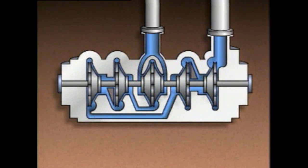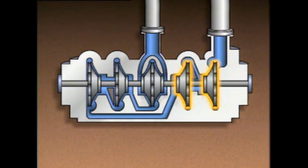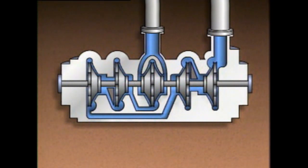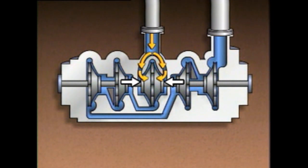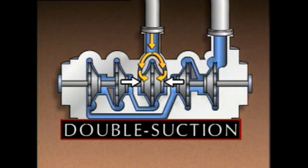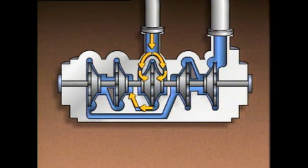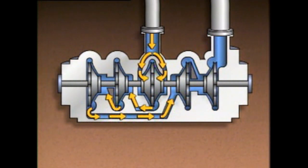A five-stage pump has five impellers and five volutes, but its flow path differs from a three-stage pump. Liquid enters through the suction and flows into the first stage impeller, which has a suction eye on both sides and is called a double suction impeller. From the first stage volute discharge, liquid flows into the second stage, then to the third, then to the fourth, and finally to the suction eye of the fifth and final stage. After passing through the fifth stage, the liquid leaves through the discharge piping.